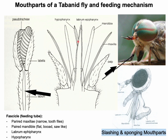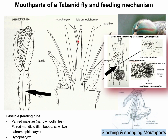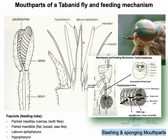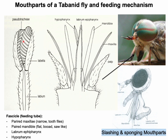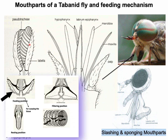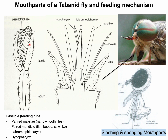The fascicle sits together in the labial gutter located on the anterior side of the labium. The stout-bodied labium bears terminally a pair of large fleshy inflatable labella. When Tabanid flies feed, the labella are retracted to expose the fascicle, which pierces and lacerates the tissue for feeding. The cutting function is performed by the mandible and maxilla.